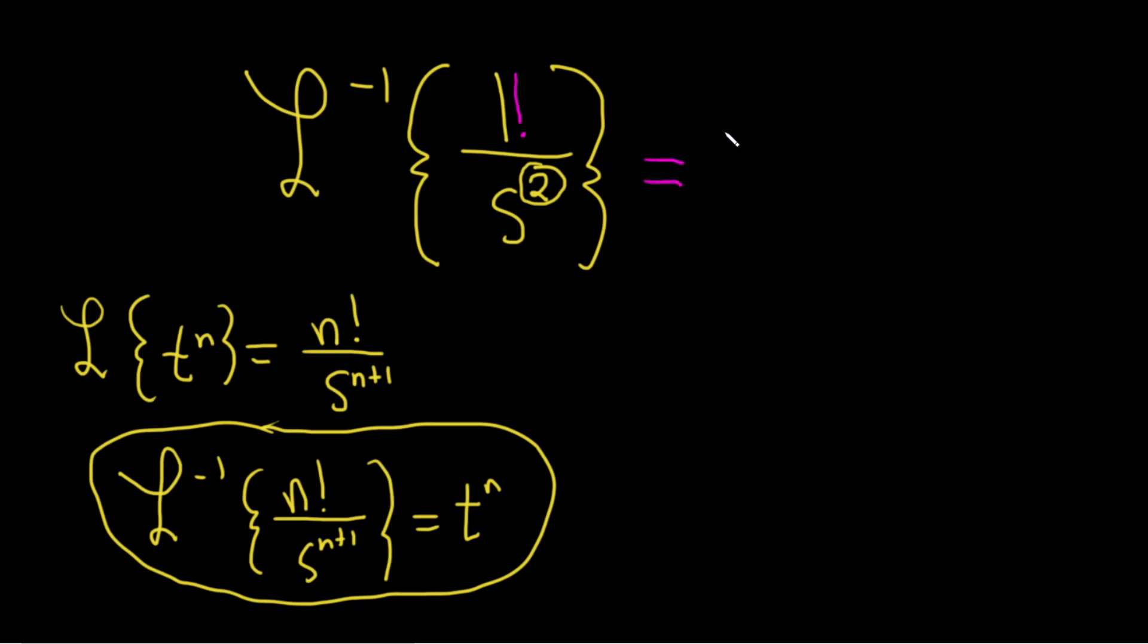So this is just equal to t to the n, but n is 1, so it's just t to the 1. So this is just equal to t. And that would be the final answer. I hope this video has been helpful to you. Good luck.